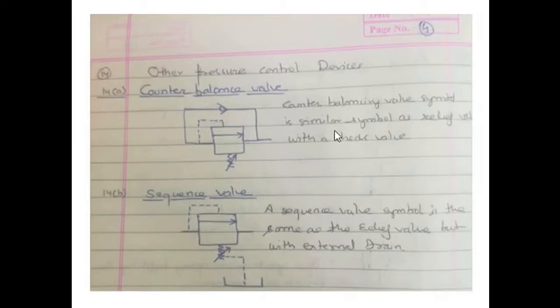You can see the symbol of relief valve and one extra check valve is provided. 14B is sequence valve. A sequence valve symbol is the same as that of relief valve, but external drain is provided.